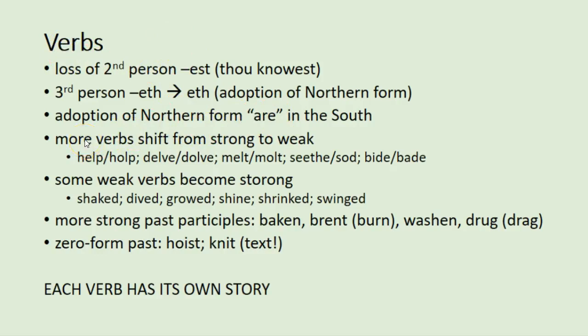More verbs in early modern English shift from strong verbs to weak verbs. We frequently had forms like 'I hope my mother' instead of 'I helped my mother'; 'I dove' instead of 'I delved into a cave'; the cheese moult — and this survives in the derived participle molten. Seethe, meaning to boil, goes back to Old English seavion. Its past was 'I sod,' and sodden means boiled, which is where we get the idea of sodden being wet — and also, I think, where we get soldering iron.